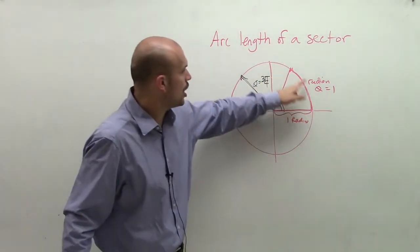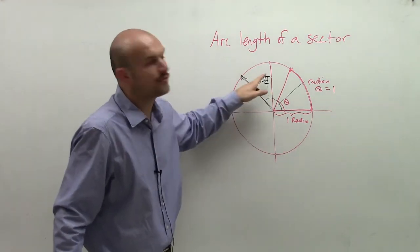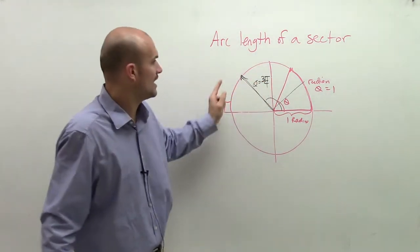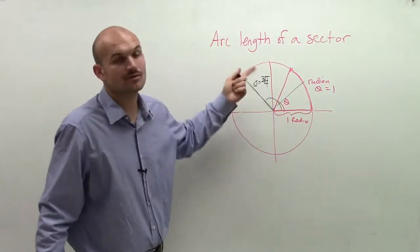And what that means is its arc length is 3 fourths of pi. So the angle is 3 fourths of pi, and the arc length is 3 fourths of pi.